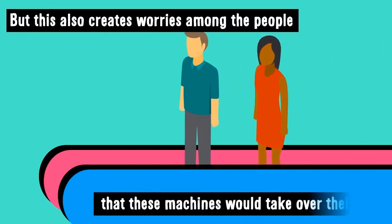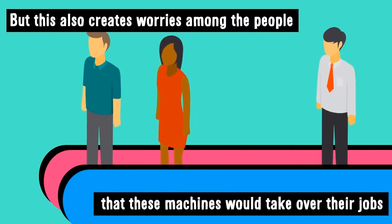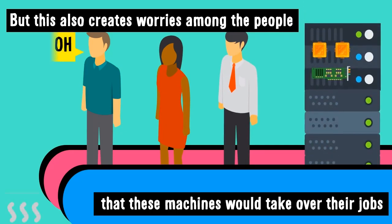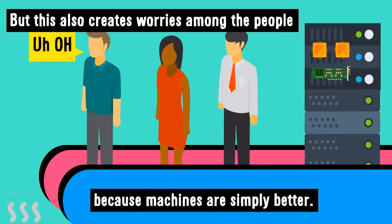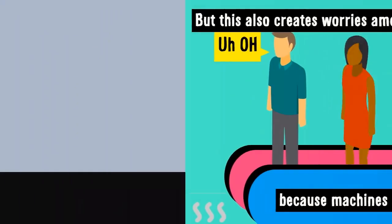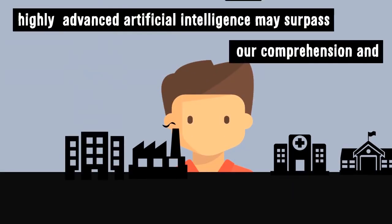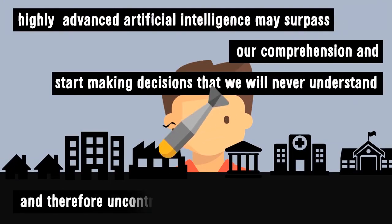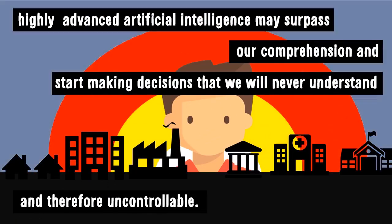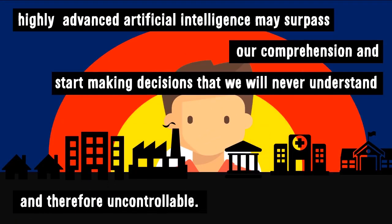But this also creates worries amongst the people that these machines would take over their jobs because they are simply better. One famous entrepreneur, Elon Musk, suggests that highly advanced artificial intelligence may surpass our comprehension and start making decisions that we will never understand, and therefore uncontrollable. Imagine it like this.